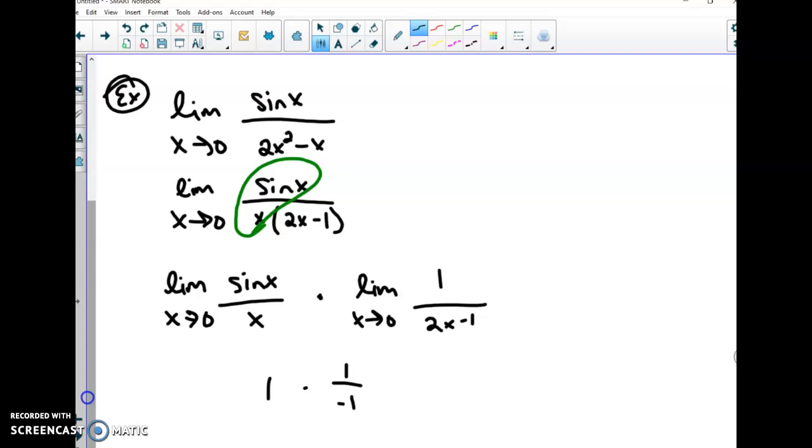Well, now it's easy. 1 times negative 1 is negative 1. I just figured out my limit. So you're going to have to sometimes break it down into two separate limits in order to figure out your true limit from the beginning just because of the factorization with that sin x over x. Or sometimes you can factor something else out right away. It just kind of depends.